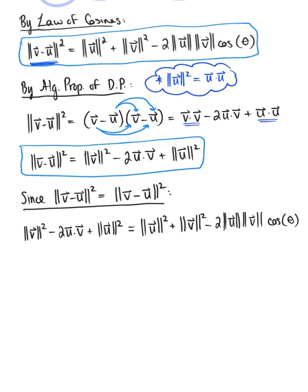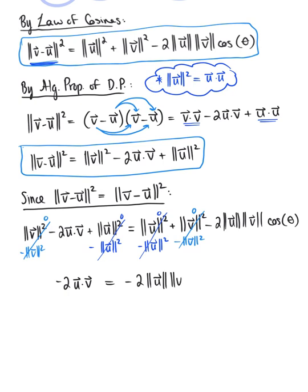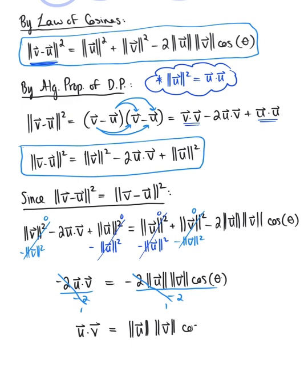Look at all this beautiful simplification. We can subtract the magnitude of vector v squared from both sides — those terms cancel. We can do the same with the magnitude of vector u squared — those cancel too. This leaves us with: negative 2 times (vector u · vector v) equals negative 2 times the magnitude of u times the magnitude of v times cosine of theta. Dividing both sides by negative 2, we see that vector u · vector v equals the magnitude of vector u times the magnitude of vector v times cosine of theta.